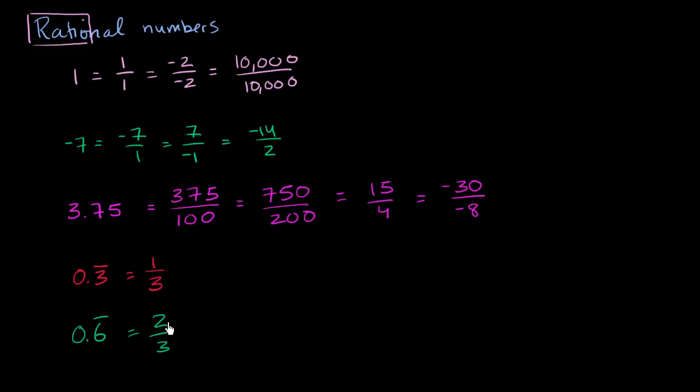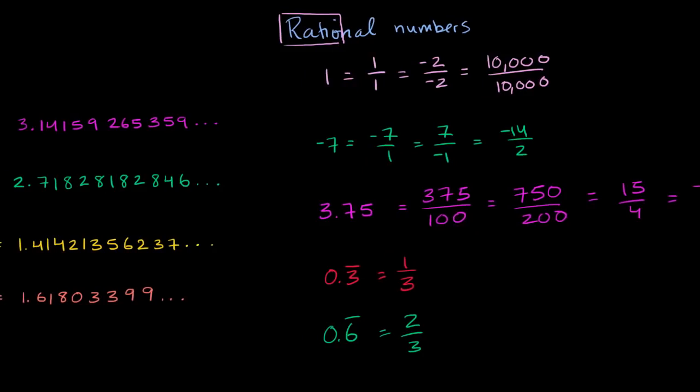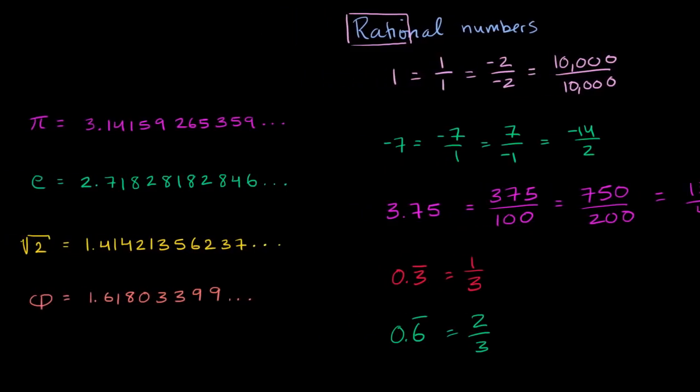So I know what you're probably thinking. Hey Sal, you've just included a lot. You've included all of the integers. You've included all of finite non-repeating decimals. And you've also included repeating decimals. What is left? Are there any numbers that are not rational? And you're probably guessing that there are. Otherwise, people wouldn't have taken the trouble of trying to label these as rational. And it turns out that actually some of the most famous numbers in all of mathematics are not rational.